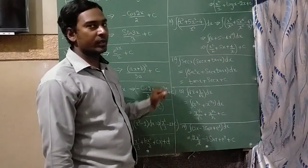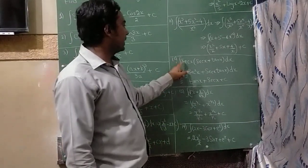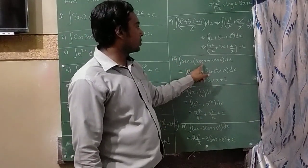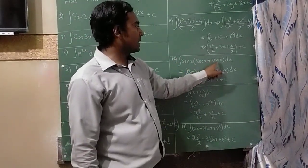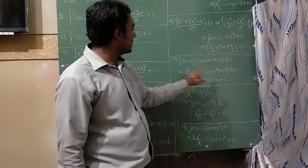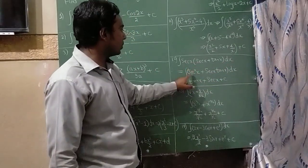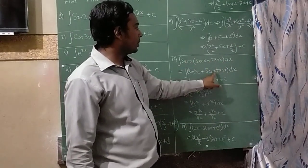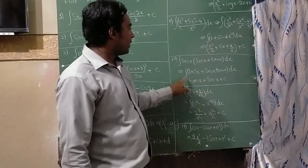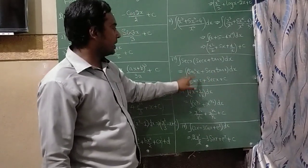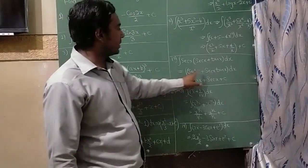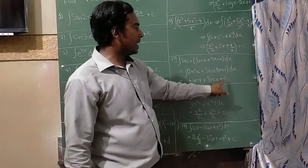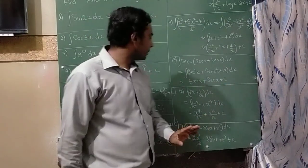This is an important question. Integration of sec x into (sec x plus tan x) dx: multiply the two terms — you get sec square x and sec x tan x. Integration of sec square x is tan x, and integration of sec x tan x is sec x, plus c.